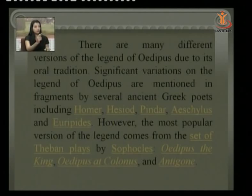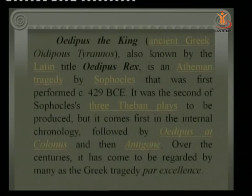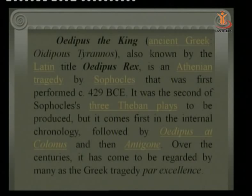Oedipus the King, also known as Oedipus Rex in Latin, is an Athenian tragedy by Sophocles first performed around 429 BCE. It was the second of Sophocles' three Theban plays to be produced, but it comes first in the internal chronology, followed by Oedipus at Colonus and Antigone. Over the centuries it has come to be regarded as a Greek tragedy par excellence.